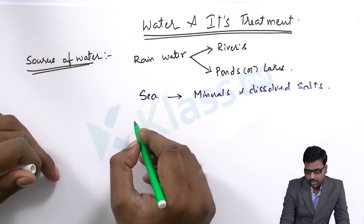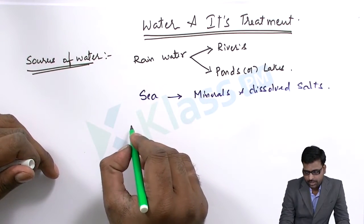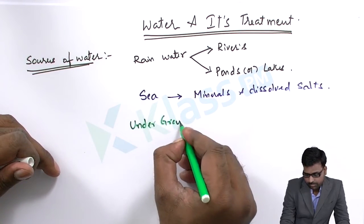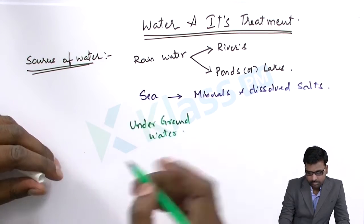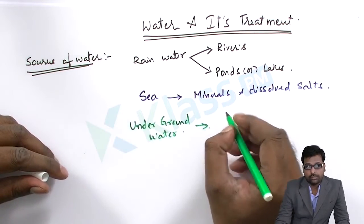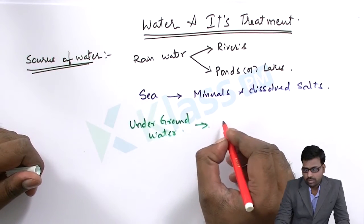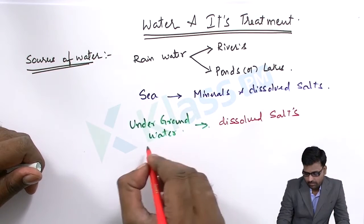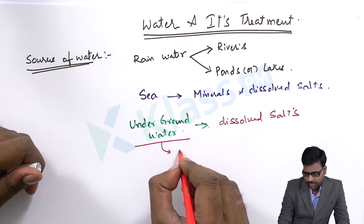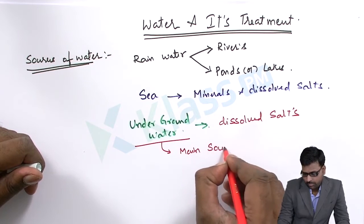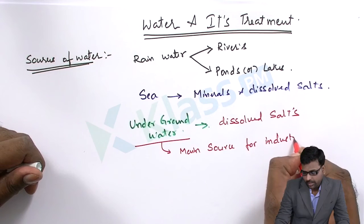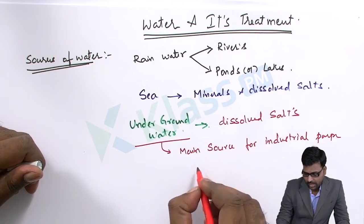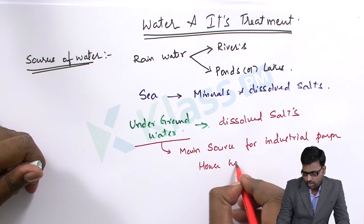The third and most important source is underground water. This underground water has many dissolved salts, which makes it the main source for industrial purposes as well as household purposes.